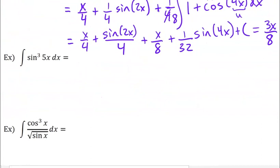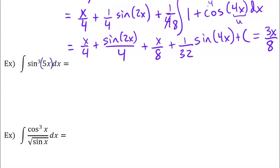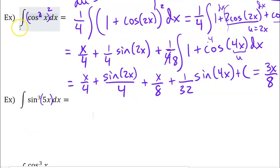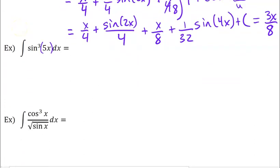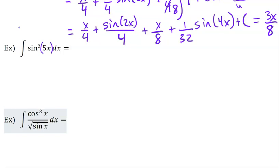Let's do one more of these. So here I have sine cubed of 5x. For this one, I've got sine cubed of 5x, and I'm going to split this into sine squared times another sine, similar to what we did above.